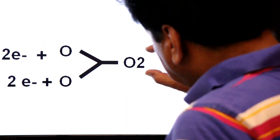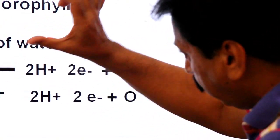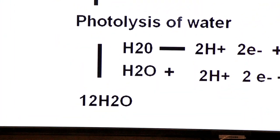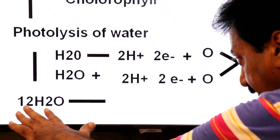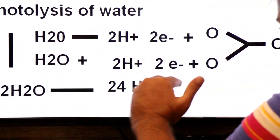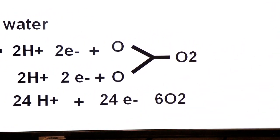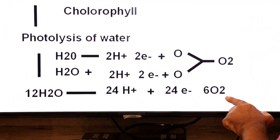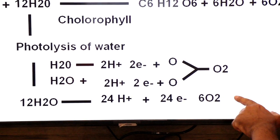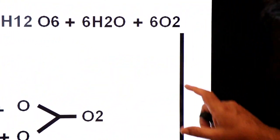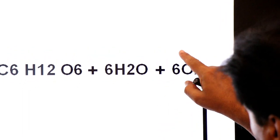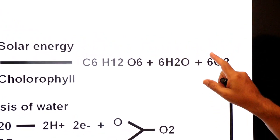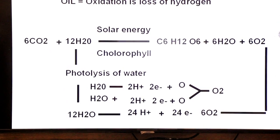To produce one molecule of oxygen, we need to break two water molecules. Here in the equation we need to break 12 water molecules. From 12 water molecules we get 24 protons, 24 electrons, and 6 molecules of oxygen. So all 6 oxygen molecules come from the breakdown of water — that is why we call it oxygenic photosynthesis.